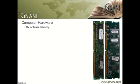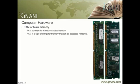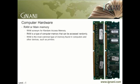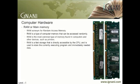RAM, or Main Memory. RAM, acronym for Random Access Memory, is also referred to as the Main Memory. RAM is a type of computer memory that can be accessed randomly — that is, any byte of memory can be accessed without touching the preceding bytes. RAM is the most common type of memory found in computers and other devices such as printers. In this picture you can see a typical RAM module used in a PC. RAM is a fast storage that is directly accessible by the CPU, and is used to store the currently executing program and immediately needed data.